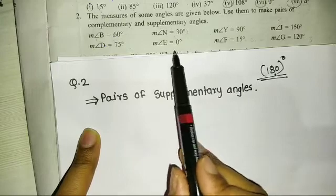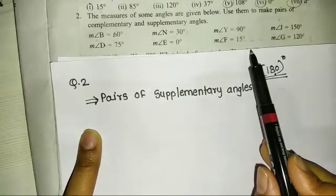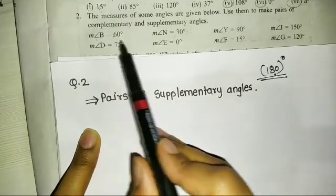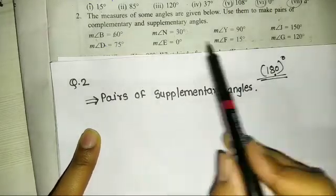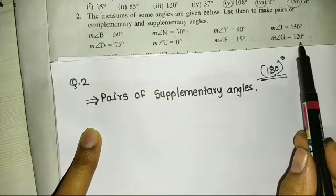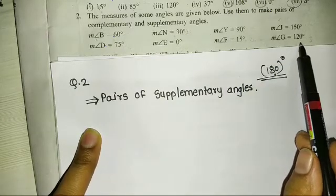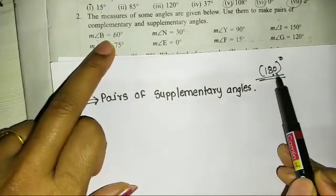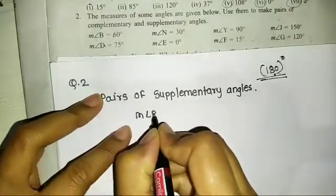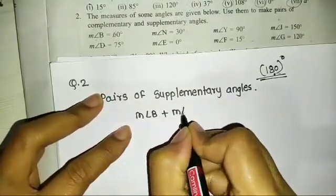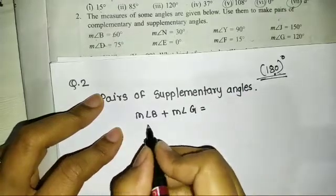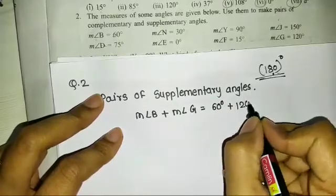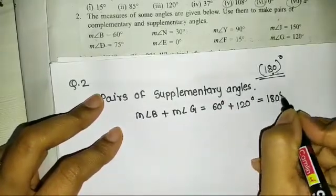Next, angle E is 0 degrees. You have angle B at 60 degrees. The measurement of angle F is 15 degrees — this does not add up. The measurement of angle G is 120 degrees. 120 plus 60 degrees is 180 degrees. So, measurement of angle B is 60 degrees and measurement of angle G is 120 degrees — their addition is 180 degrees.